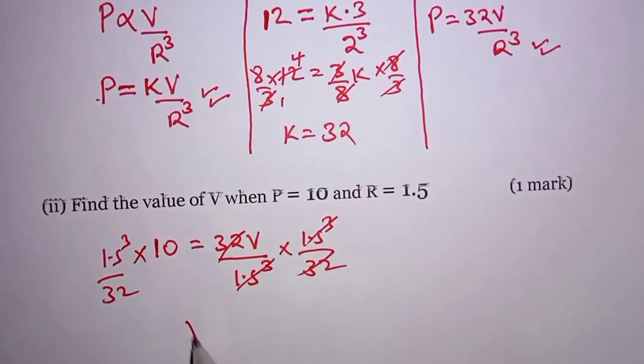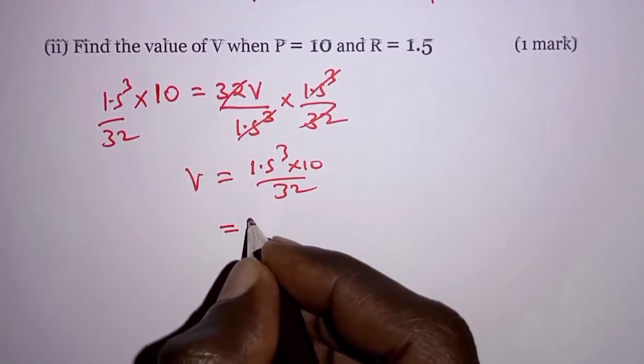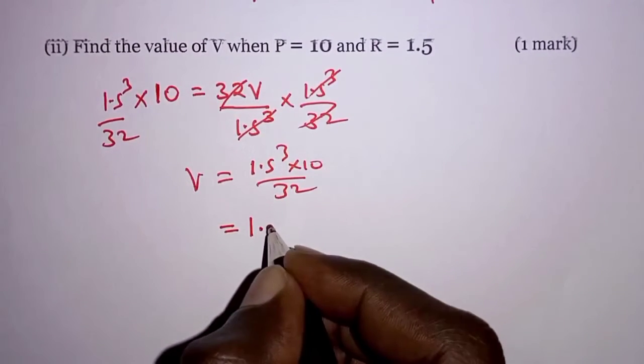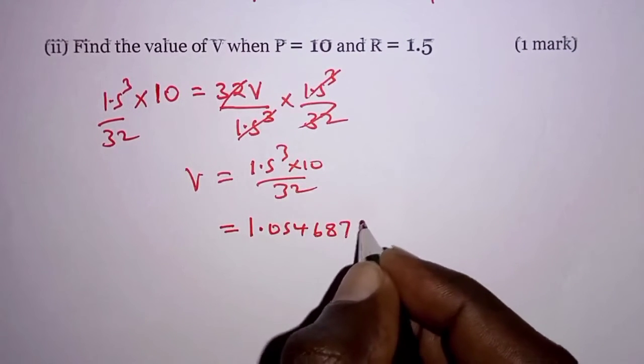And then V will therefore become 1.5 cubed times 10 over 32, and this is, from my calculator, I am able to get 1.0546875.